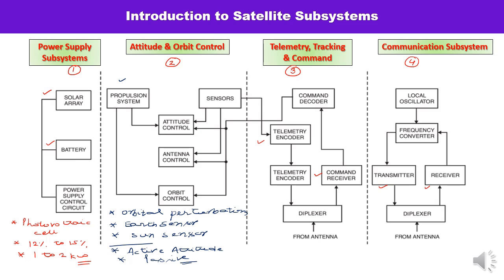There is a frequency converter in the transponder. There is an uplink frequency and a downlink frequency — at the uplink frequency, the signal is transmitted towards the satellite, while for downlink, the signal is transmitted from the satellite towards the earth station. The uplink and downlink frequencies are kept different, so frequency conversion is required, where the uplink frequency is converted to the downlink frequency and the signal is retransmitted to the earth station. Various satellite antennas commonly used include reflector antenna, horn antenna, wire antenna, and Cassegrain antenna, all of which are integral parts of the satellite subsystem.